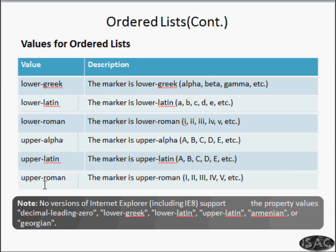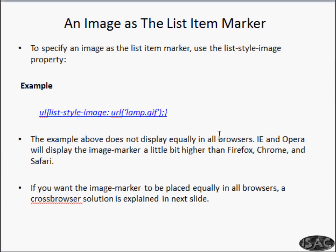There are also values like lower-latin, lower-roman, upper-alpha, and upper-roman that can be used as bullets for ordered lists. Now, for using an image as a list item marker, instead of list-style-type, you use the list-style-image property. You specify the image URL there. Let us see this example.